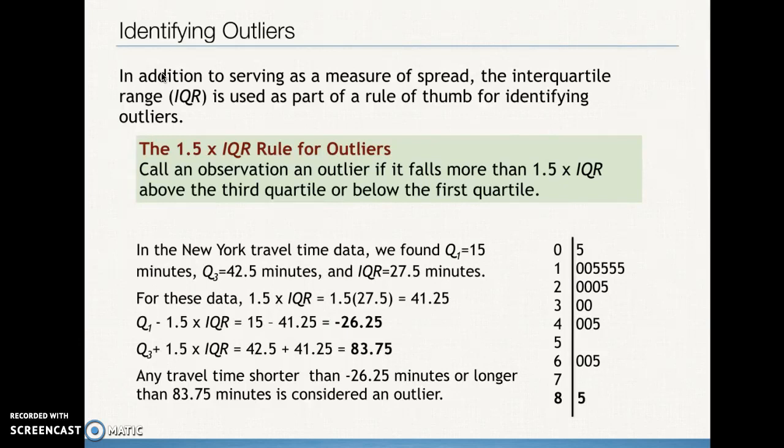Looking back at our stem plot, we did have one value — the maximum — that is above our upper threshold. So 85 is an actual outlier in this data set. A travel time of 85 minutes is far above the pattern of the rest of the distribution.